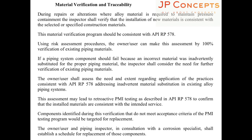Material verification and traceability should be in accordance with API Recommended Practice 578. During repairs or alterations where alloy material is required to maintain pressure containment, the inspector shall verify that installation of new materials is consistent with the selected or specified construction materials. A thorough reading of API Recommended Practice 578 is recommended for the certification exam. Components identified during verification that do not meet the acceptance criteria of the PMI testing program will be targeted for replacement, with a schedule established by the owner/user and piping inspector in consultation with the corrosion specialist.